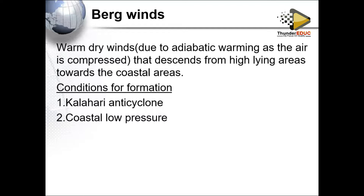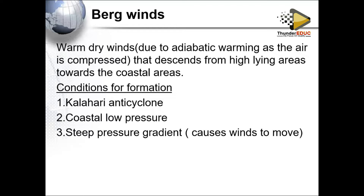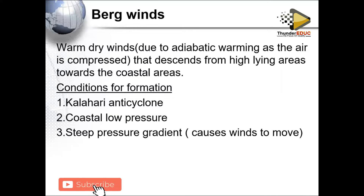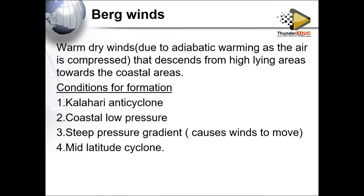The second condition also involves a steep pressure gradient. Winds move from high pressure to low pressure — we already have the Kalahari high pressure in the interior and the coastal low at the coast, two pressure systems of different composition. This causes winds to move from the interior towards the coastal low.